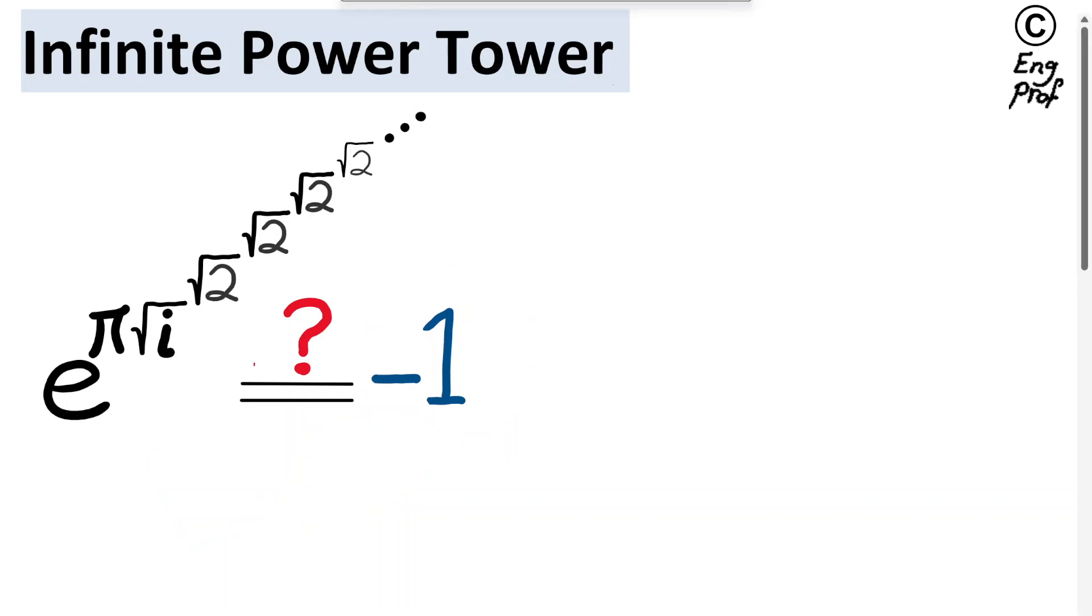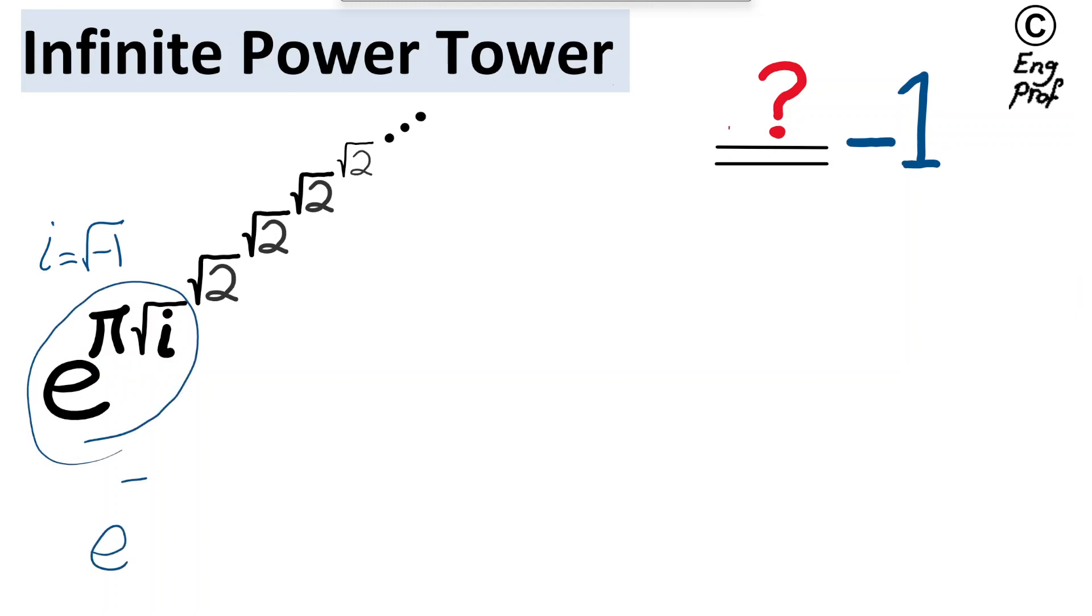To examine this quickly, let's just take a look at the base and the first exponent. In the base we have the Euler's number e, and in the first exponent we have pi times the square root of i, in which i is the well-known square root of negative 1. So effectively, here we have e to the pi and square root of square root of negative 1.